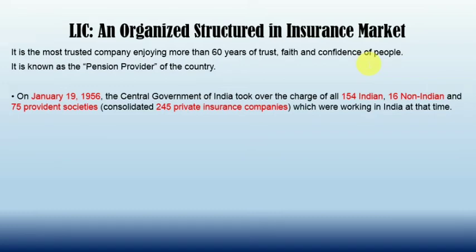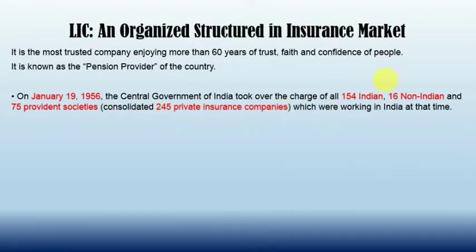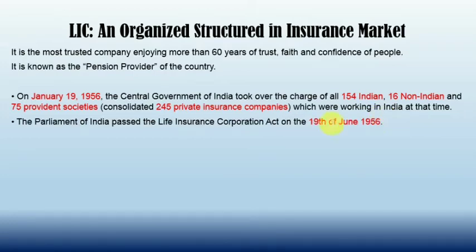It is known as the pension provider of the country. Analysis of available data shows that the year 1956 was very prominent in terms of changes that took place in the insurance sector. On January 19, 1956, the central government of India took over the charge of all 154 Indian, 16 non-Indian, and 75 provident societies, consolidating 245 private insurance companies working in India at that time. The Parliament of India passed the Life Insurance Corporation Act on 19th June 1956.